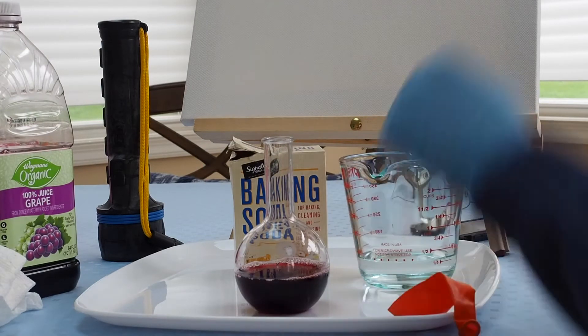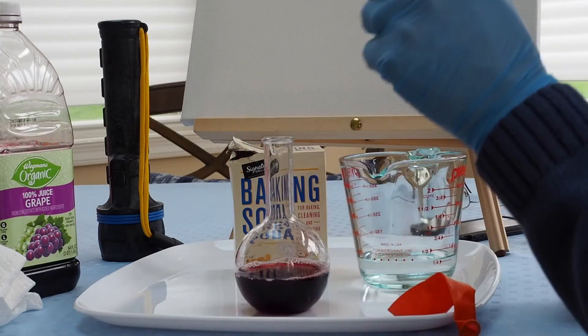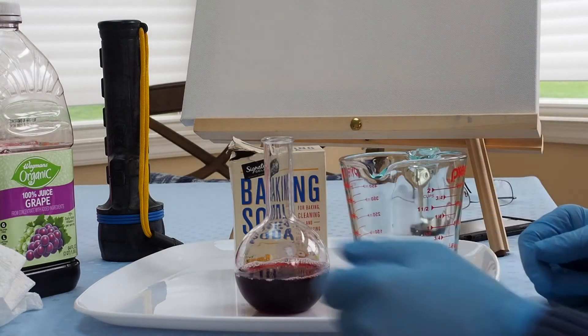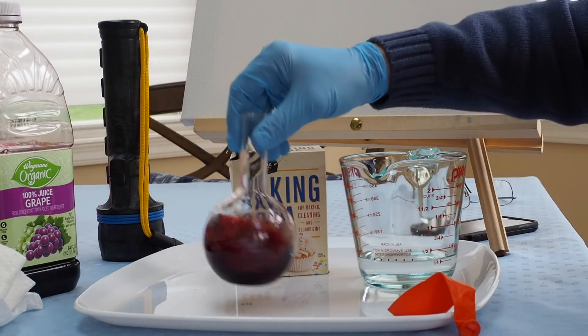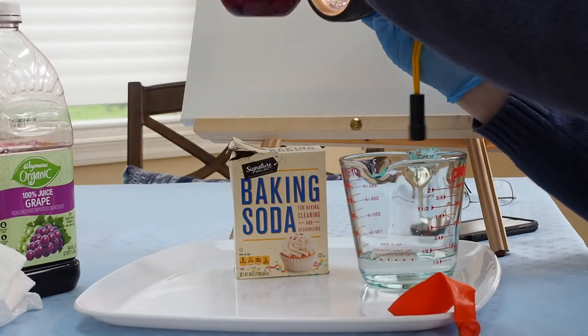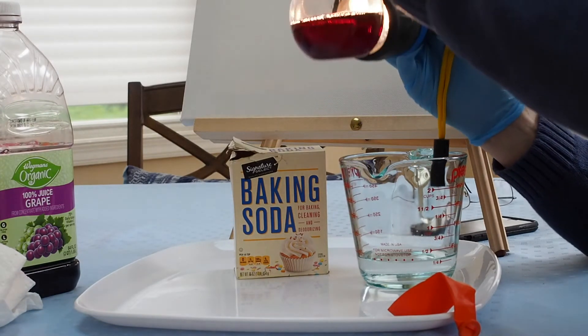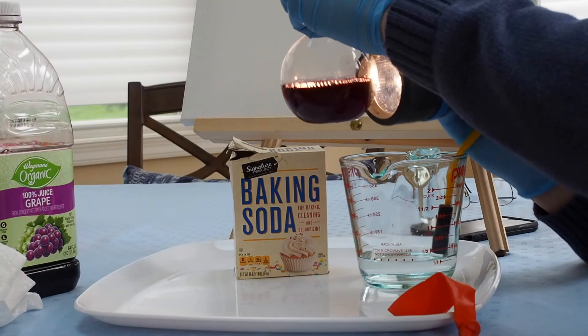Now we're starting the experiment over again. So I took out the baking soda and grape juice mix that I had that was all foamy. I cleaned the flask, and I put in more. So just to make sure we all remember the colors.